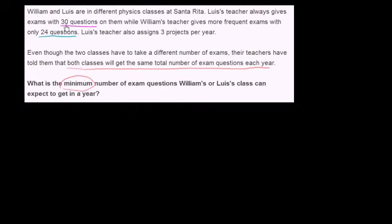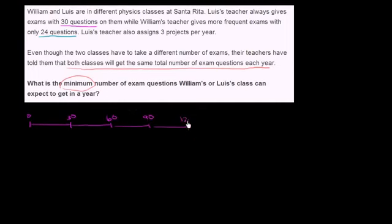So let's think about what's happening. If we think about Luis's teacher, who gives 30 questions per test: after the first test he would have done 30 questions, after the second test 60, after the third test 90, after the fourth test 120, and after the fifth test he would get to 150 total questions. We could keep going looking at all the multiples of 30. We're looking at multiples of the numbers — we want the minimum multiple, or the least multiple.